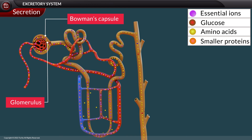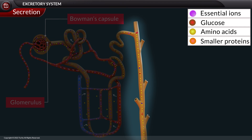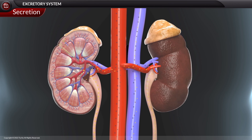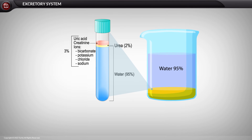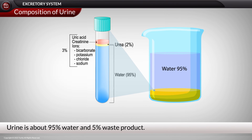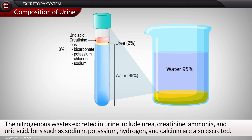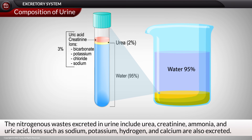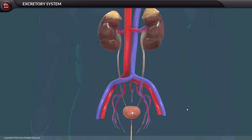The waste ions and hydrogen ions pass from the capillaries into the renal tubule — this process is called secretion. The secreted ions combine with the remaining filtrate and become urine. The urine flows out of the nephron tubule into a collecting duct, passes out of the kidney through the renal pelvis into the ureter, and down to the bladder. Urine is about 95% water and 5% waste product. The nitrogenous wastes excreted in urine include urea, creatinine, ammonia, and uric acid. Ions such as sodium, potassium, hydrogen, and calcium are also excreted.